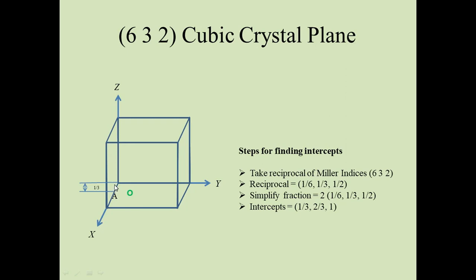This is the region 2/3 up to point B of this edge along the y-axis, and this is the complete edge so your intercept is 1, and this is point C. When you join point A to B, B to C, and C to A, you will get a plane that will be the (632) cubic star plane.